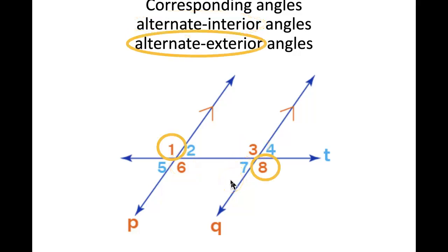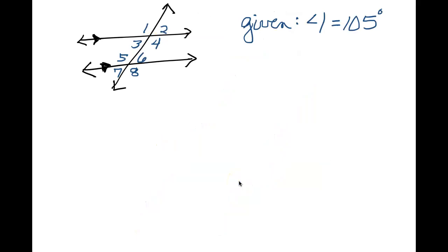Alternate exterior is angles on the outside of those two parallel lines. So that would have been the 1 and 5 and 4 and 8. But alternate means they're on opposite sides of the transversal. So 1 and 8 are alternate exterior angles, and 5 and 4 are alternate exterior angles.